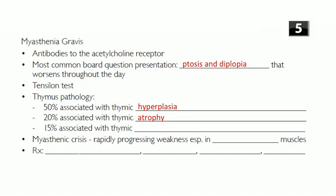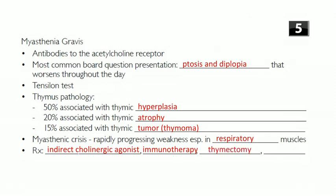Myasthenia gravis has thymic associations: about 50% is associated with thymic hyperplasia, 20% with thymic atrophy, and 15% with thymoma. The most worrisome condition is a myasthenic crisis — rapidly progressing weakness especially in respiratory muscles. Treatment includes indirect cholinergic agonists like pyridostigmine and neostigmine. Because it's autoimmune, immunotherapy agents like corticosteroids, azathioprine, and cyclosporine can be used. Patients with generalized myasthenia gravis often undergo thymectomy, and plasmapheresis can be used to filter out the antibodies.